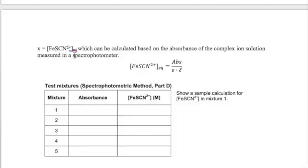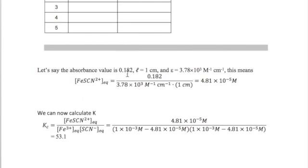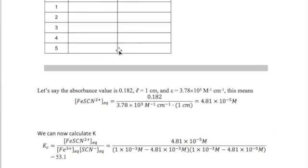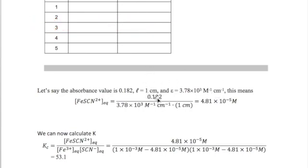For the equilibrium concentration of iron thiocyanate, we will use Beer's Law. Let's say our absorbance is 0.182. This will be measured using the spectrophotometer and recorded in your lab report in a table located near the bottom of page 9 as shown here. Our epsilon is 3.78 times 10 to the third per molar per centimeter. We will discuss in the next video how we obtain this value. And our path length in this case is 1 centimeter.